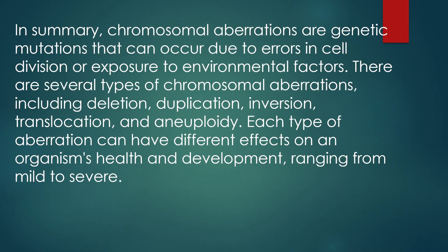In summary, Chromosomal Aberrations are genetic mutations that can occur due to errors in cell division or exposure to environmental factors. There are several types of Chromosomal Aberrations, including deletion, duplication, inversion, translocation, and aneuploidy. Each type of aberration can have different effects on an organism's health and development, ranging from mild to severe.